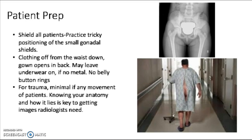For patient prep, you're going to shield all your patients. Using the fig leaf shield on patients is really tricky, and Jeff is really good at it, so practice it in lab so you're able to use it comfortably — otherwise you're going to have a lot of repeats because you'll get that shield in the anatomy. Everything waist down comes off, and you can leave the underwear on unless it has metal, buttons, or snaps.